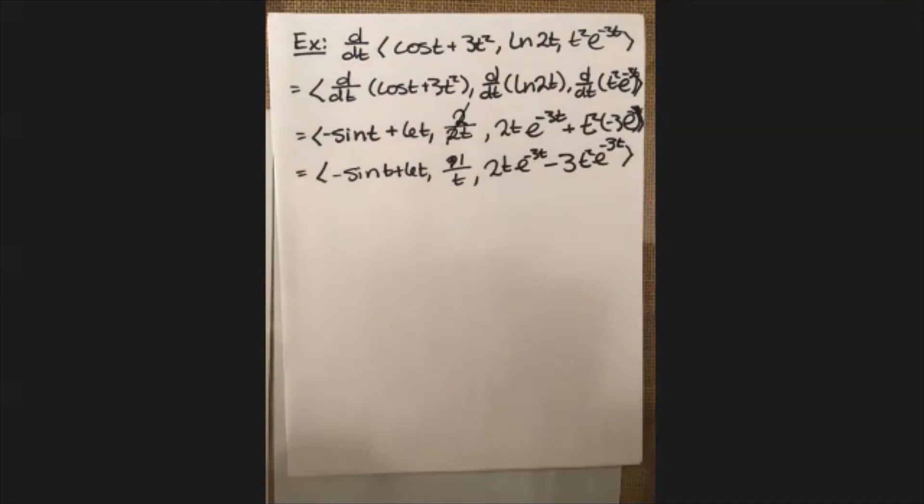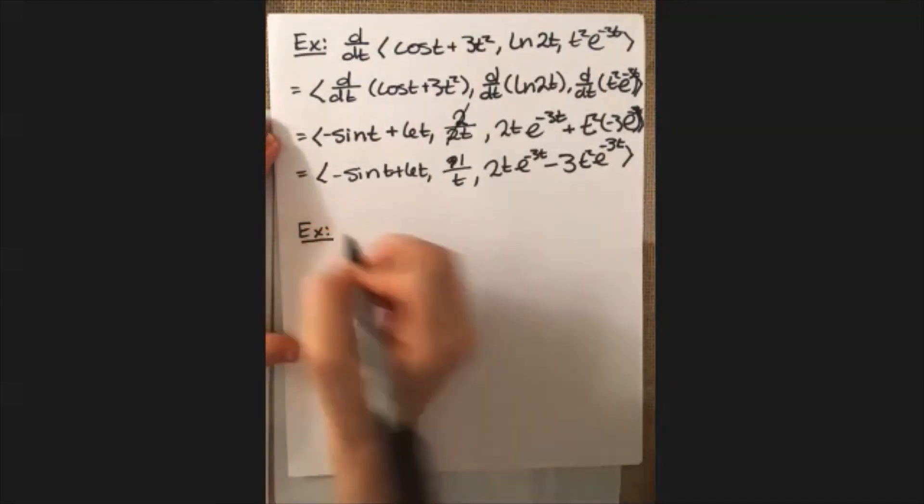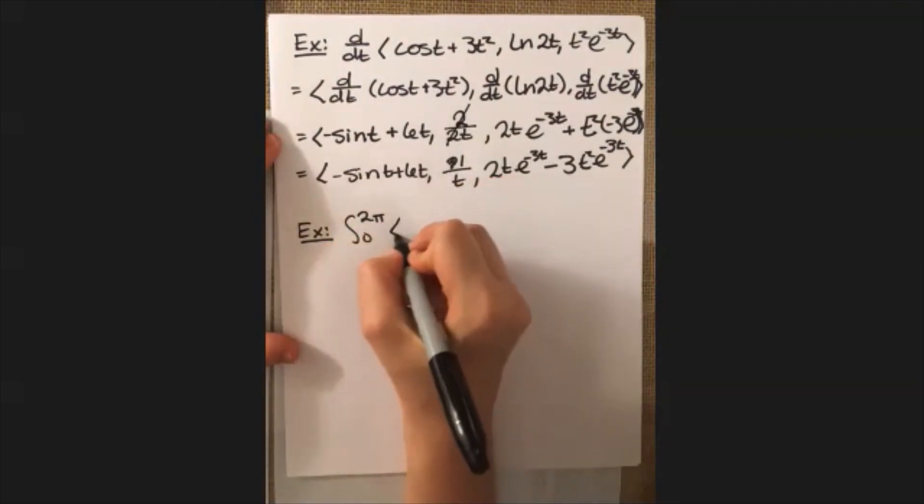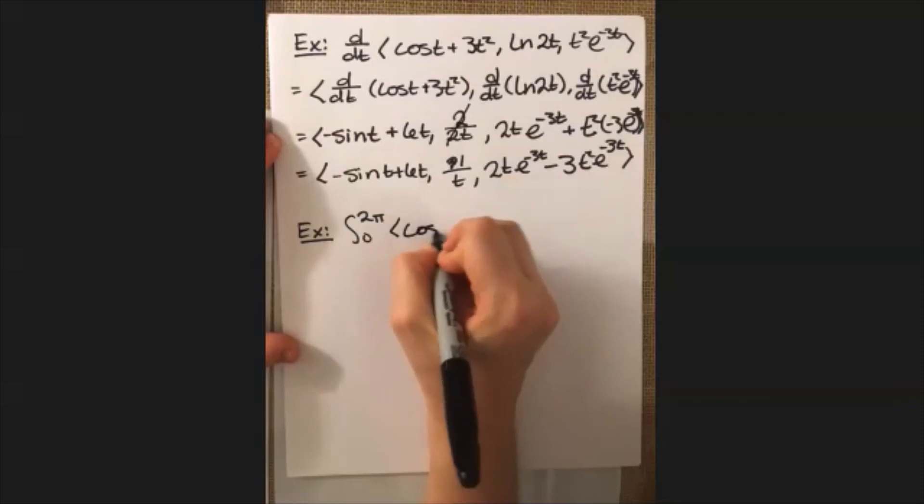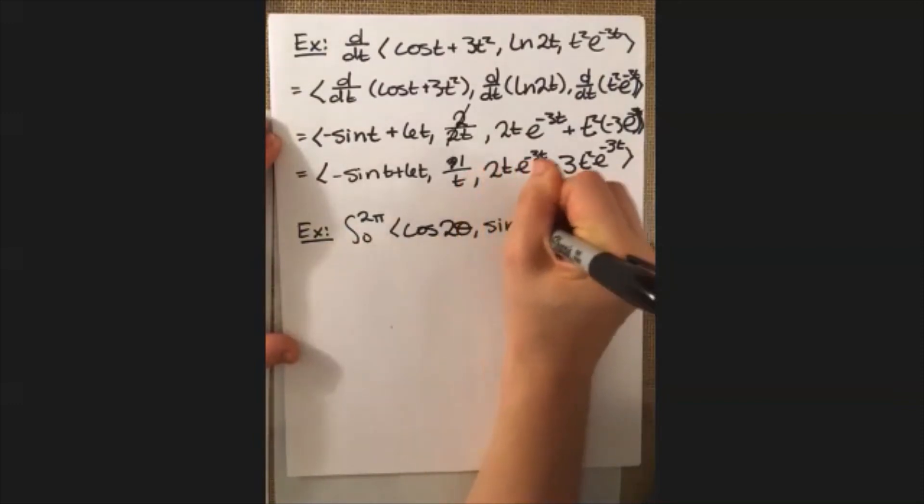All right, for the last example, let's do an integral really quick. So we have the integral from 0 to 2 pi of the vector cosine 2 theta sine of theta d theta.